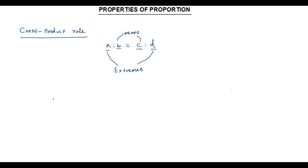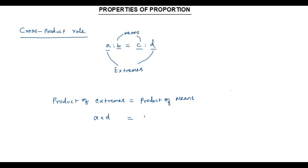Now let us see how the first property of proportion, cross product rule, works in the proportion A is to B is equal to C is to D. Cross product rule says the product of extremes is equal to the product of means. That is, if I multiply the extremes A and D, that will be equal to the multiplication of the means B and C. So in any proportion we can use this cross product rule: A times D, the product of extremes, is equal to the product of means B times C.